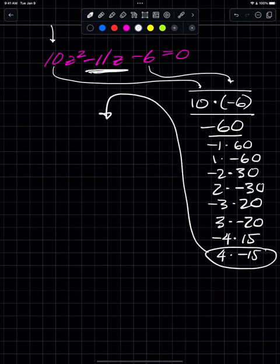If I go to the next one, 4 times negative 15, note the sum of 4 and negative 15 is negative 11. This informs us how to split this middle term up. We want to split it into plus 4z minus 15z and then I just have the negative 6, equals 0.